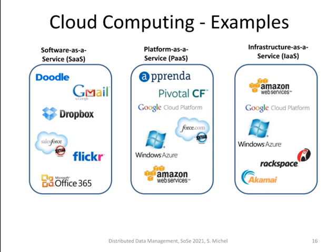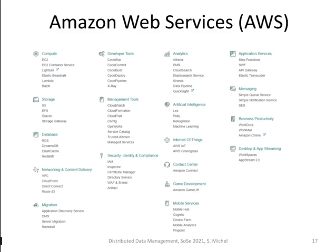Here are some examples of cloud computing. First, software as a service, with prominent examples being Google and Doodle, Flickr, Office 365, and so on. Then we have platform as a service, with Amazon as an example. They also fall into infrastructure as a service because they offer so many different services, as does Google Cloud Platform. For infrastructure as a service specifically, we have Rackspace or Akamai.